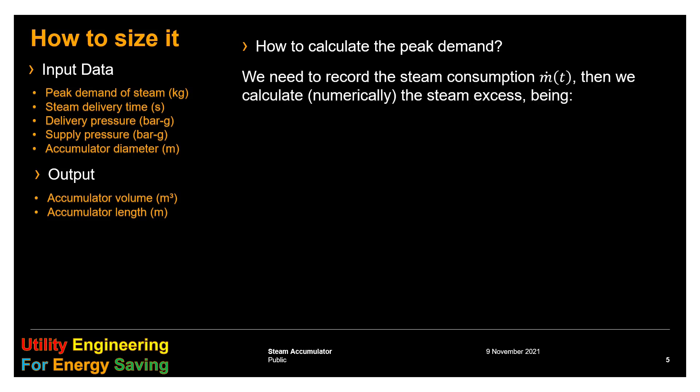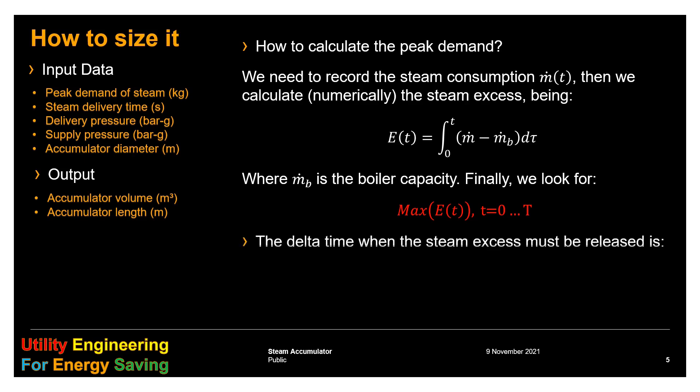How to calculate the peak demand? We need to record the steam consumption, mass flow function of time, and then calculate numerically the steam excess, being the integral of the difference between steam consumption and boiler capacity. Finally, we look for the maximum of that function. The delta time when the steam excess must be released is the difference between the time when the function has a maximum and the previous zero value closer to the maximum.